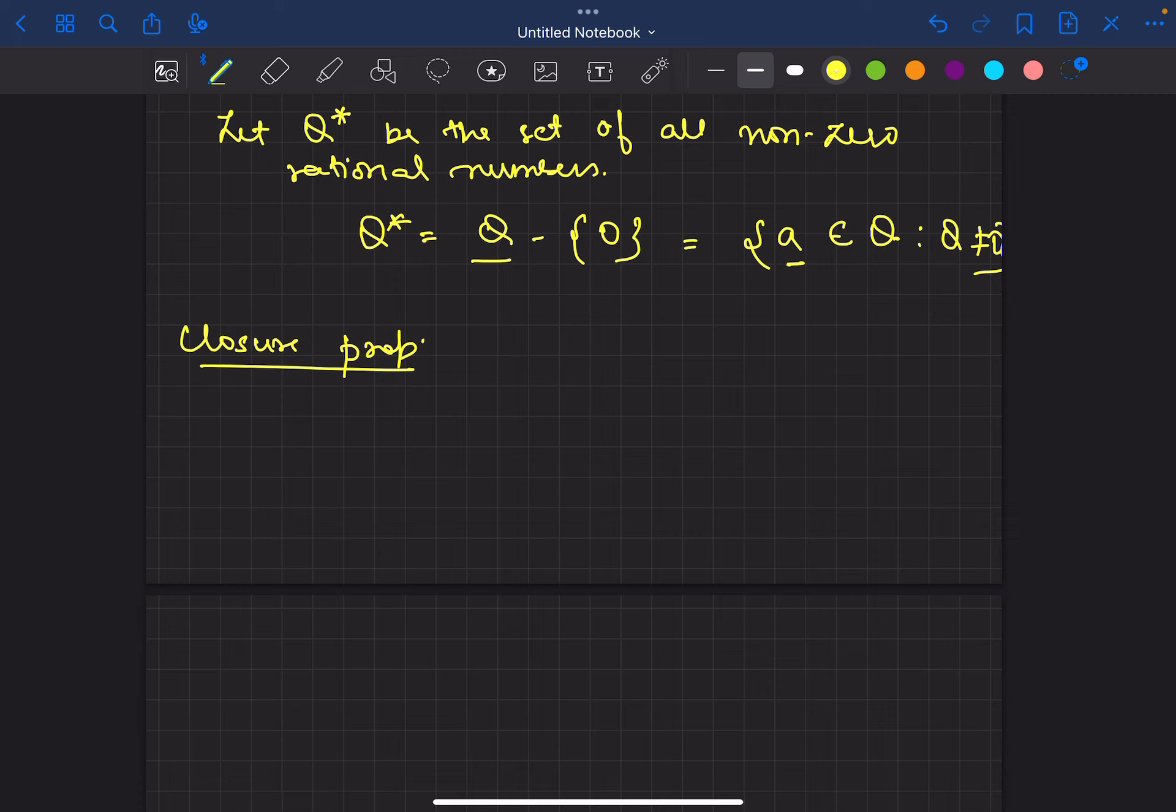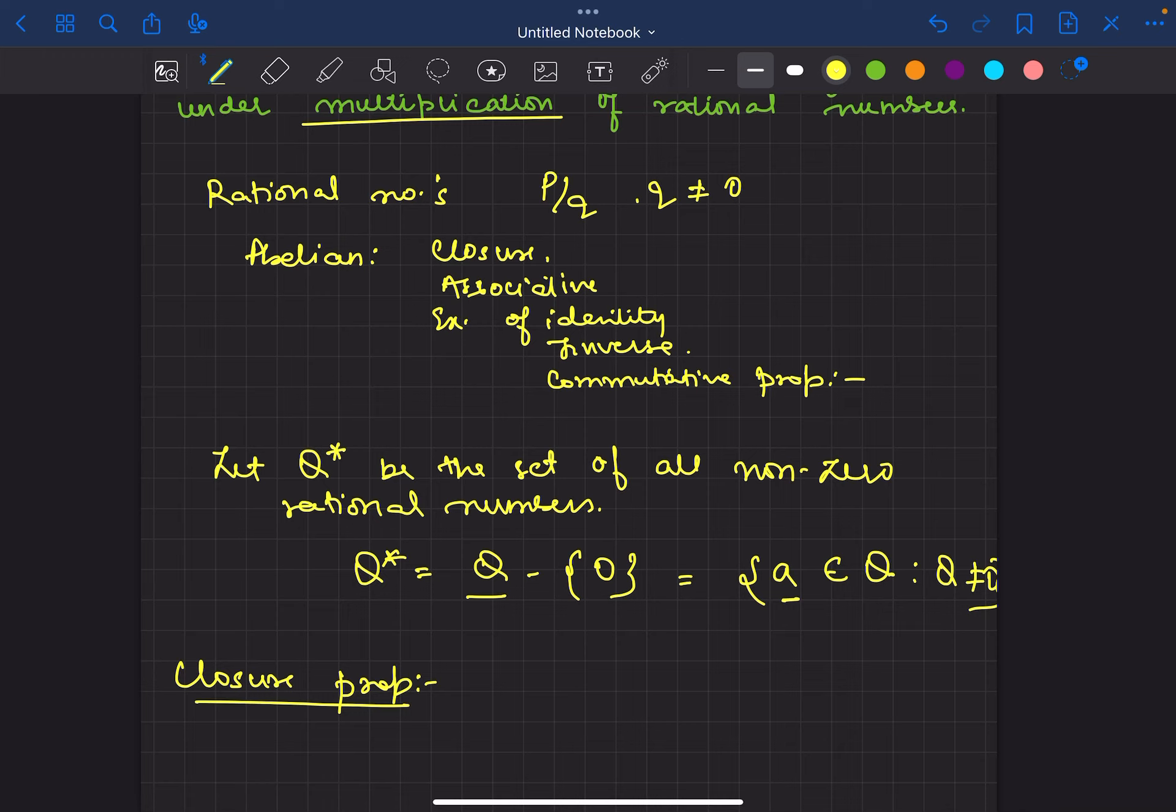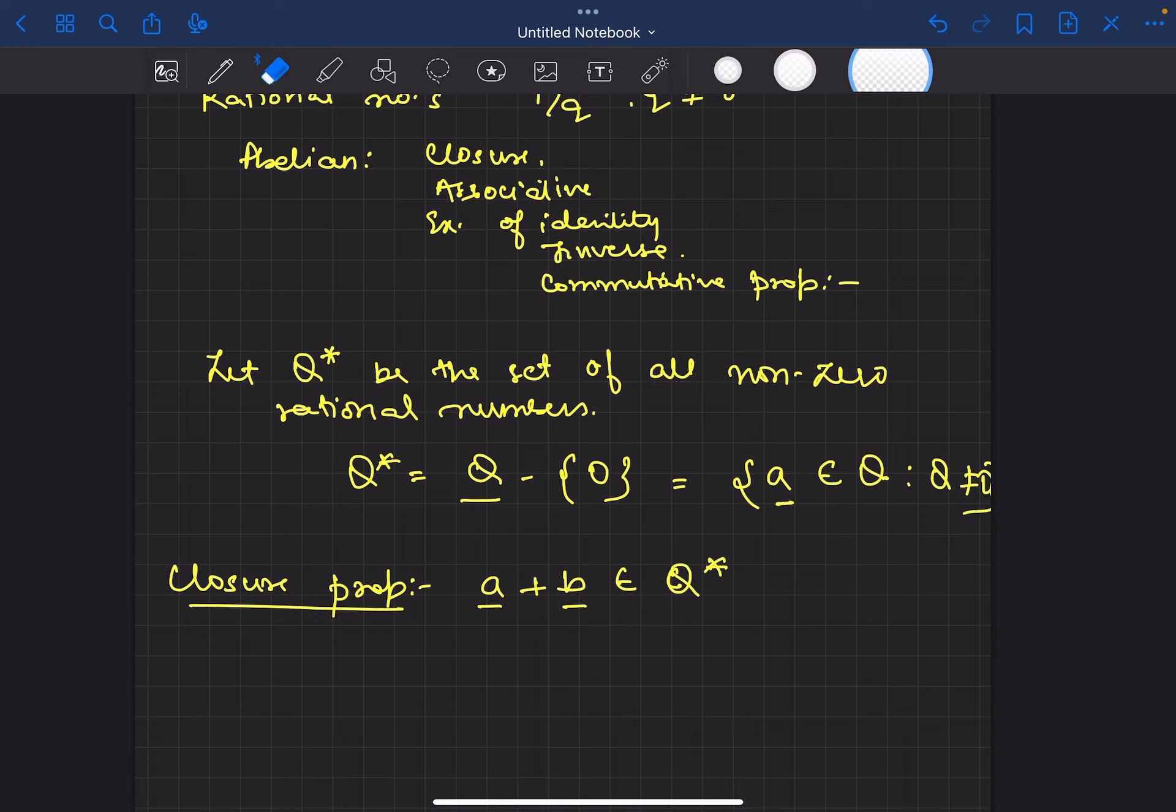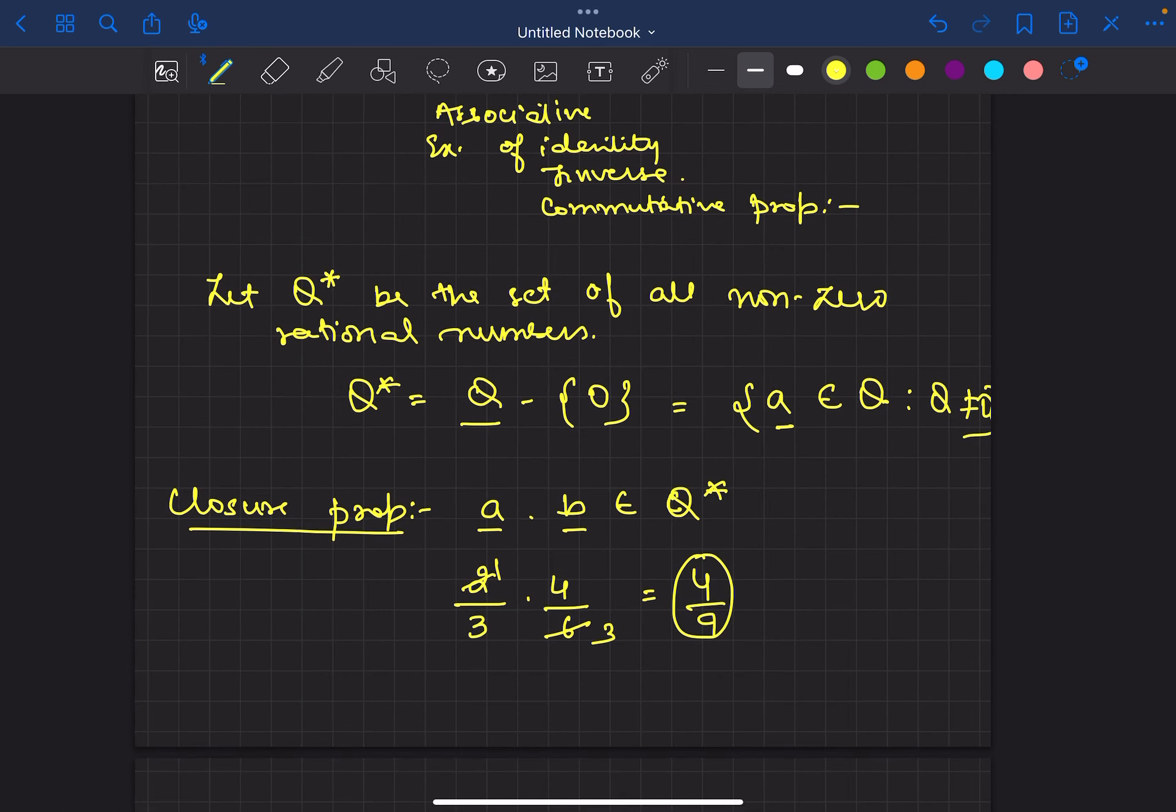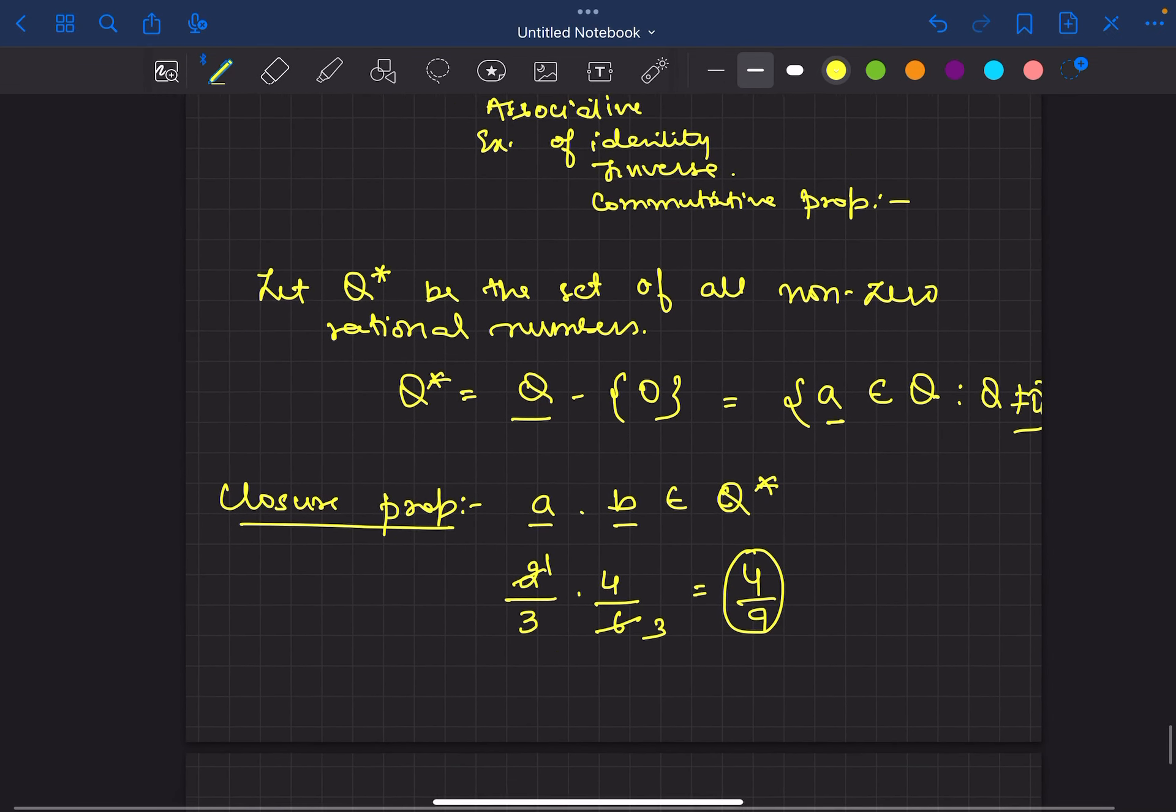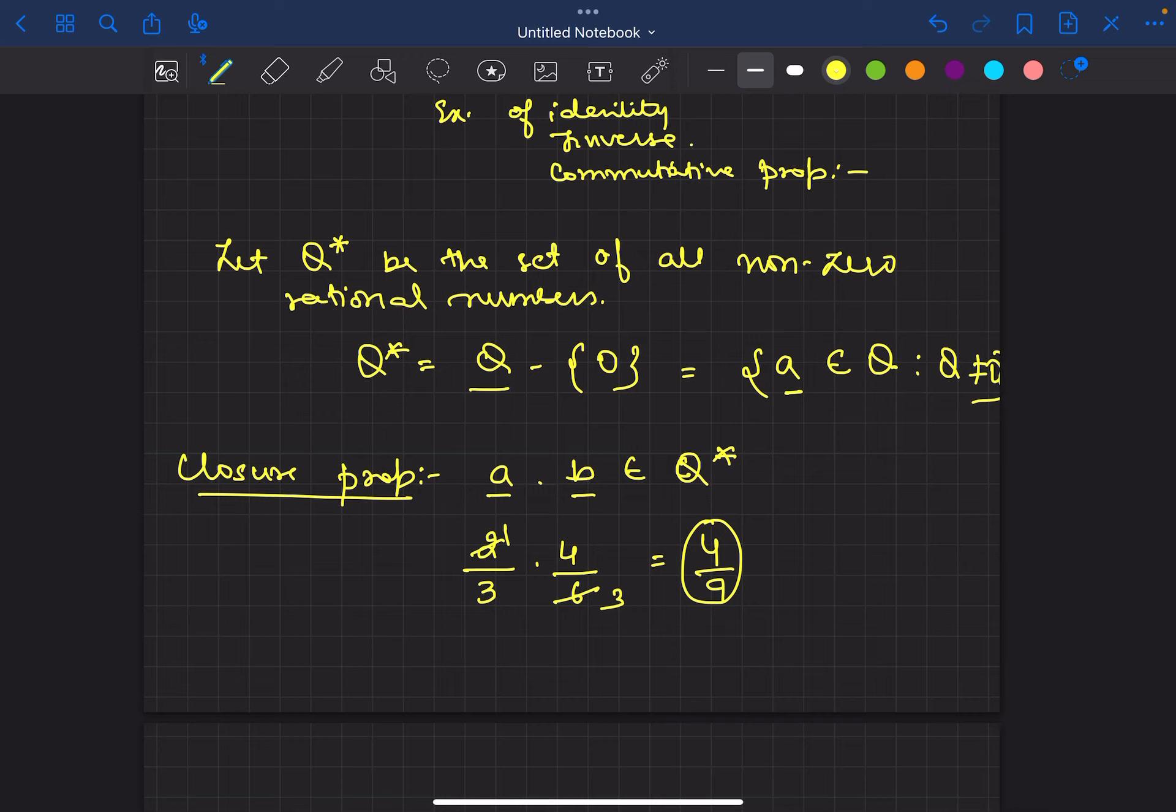Does closure property satisfy or not? Closure property means A plus B should belong to this set. But one second, here is not a plus, here is a multiplication operation. So if I take 2 by 3 or 4 by 6, for example 2 by 3 times 4 by 9, it will belong to this set.